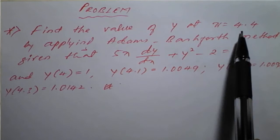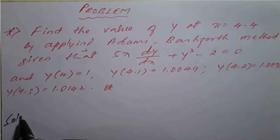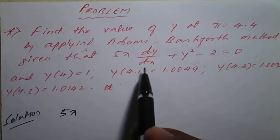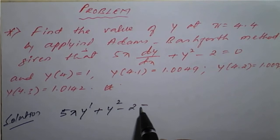We need to find y after 4.3, that is y(4.4). So, solution: the given differential equation is 5x dy/dx plus y squared minus 2 equal to 0. I will write it as 5x into dy/dx, which can be written as y dash, plus y squared minus 2 equal to 0.